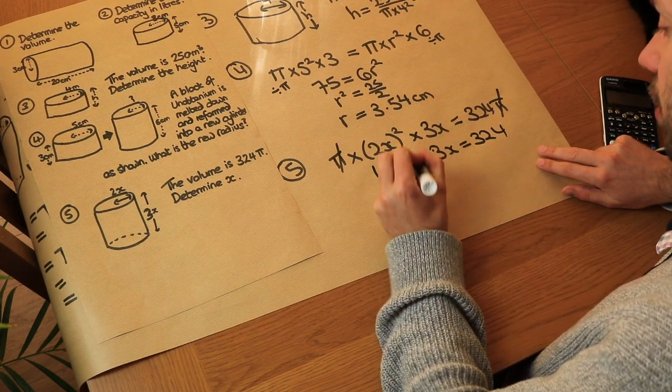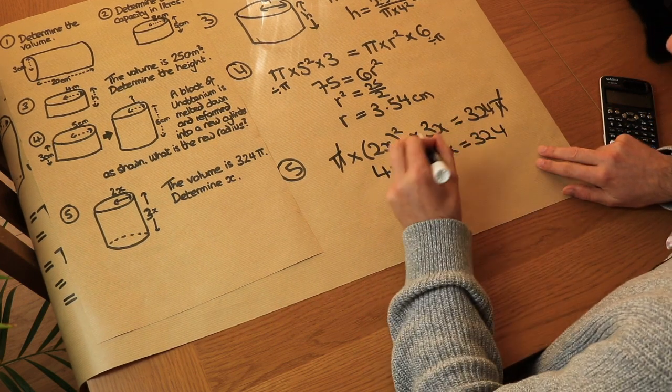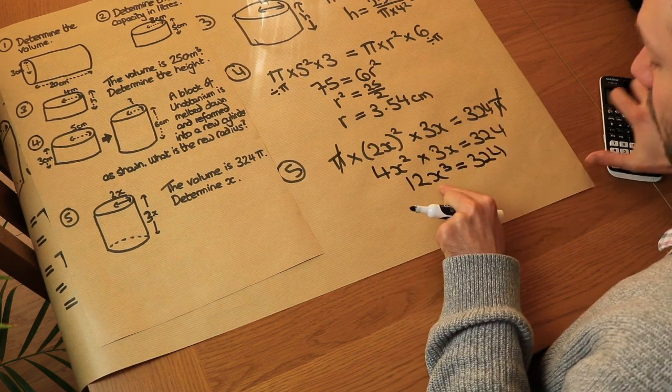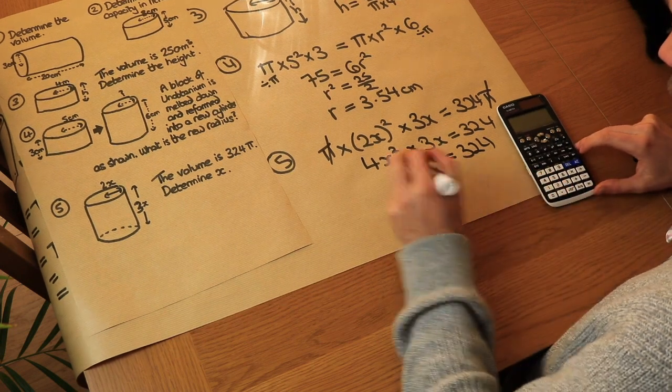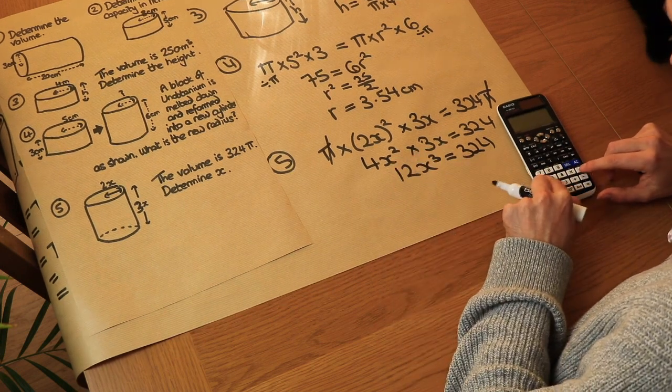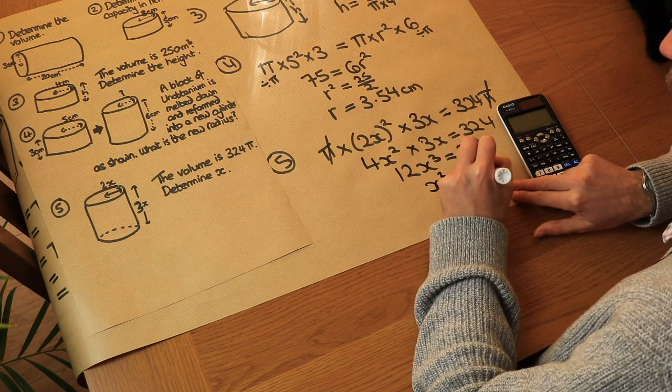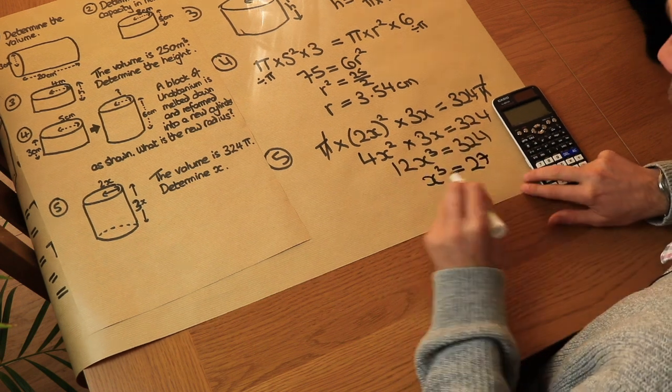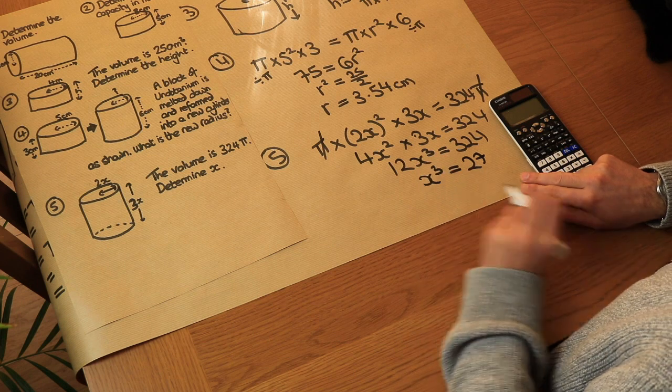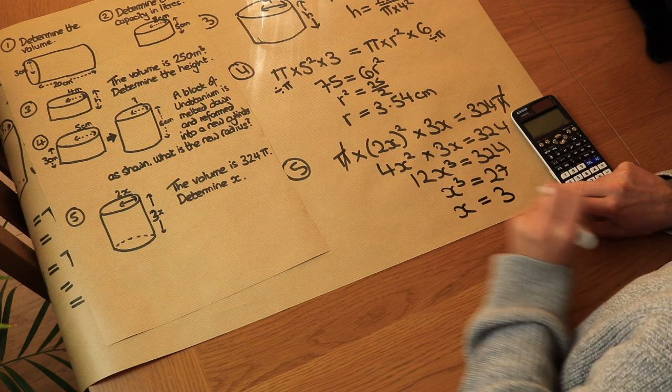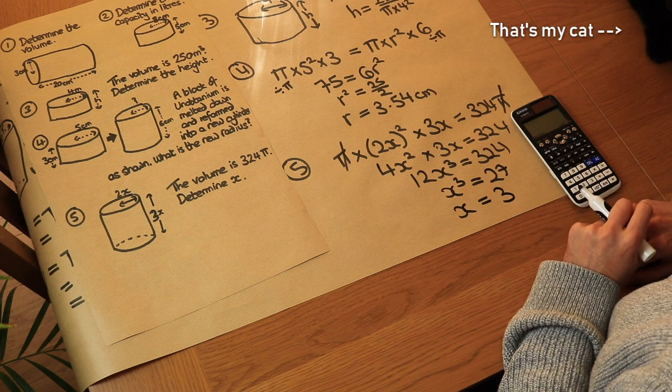And if we simplify this further, well 4 times 3 is 12, x squared times x is x cubed. Now x is being cubed and then you're multiplying it by 12, so let's divide both sides by 12. 324 divided by 12 is 27, x cubed is 27. This looks promising because 27 is a cube number, and then we cube root both sides to get rid of that cubed, and we find that x is equal to 3.